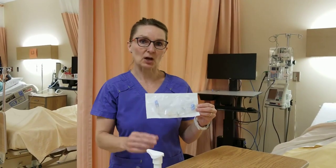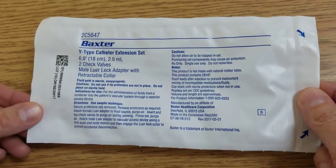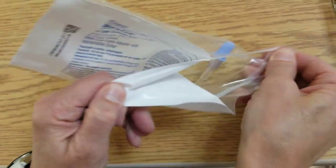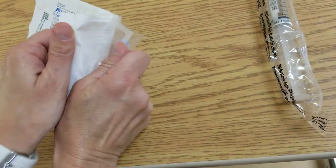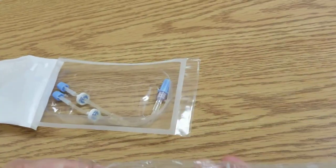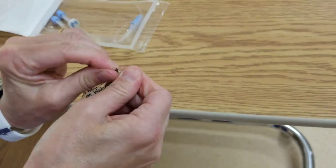Today I'm going to show you how to flush a Y-type extension set. So I begin by opening my package and I'm going to keep it in this bag, and then I'm going to open up my pre-flush.